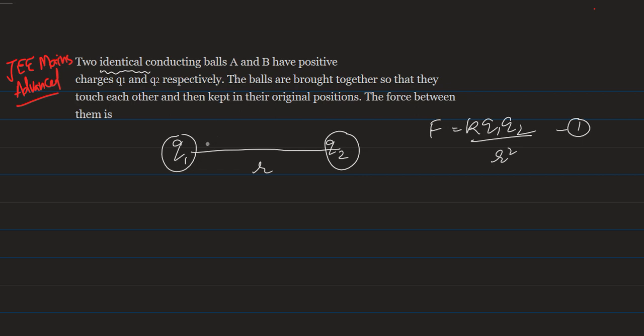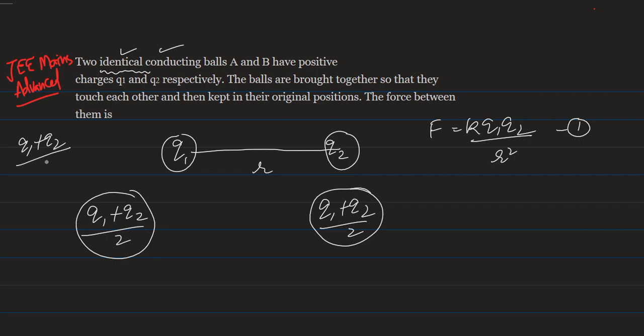The conducting balls will share their charges equally because these are identical. It means that after sharing, the charge on one ball is Q1 plus Q2 upon 2, and the charge on the other ball is Q1 plus Q2 upon 2. So after sharing, the charge on both balls will be equal. Initially they have total charge of Q1 plus Q2 and they share it equally.